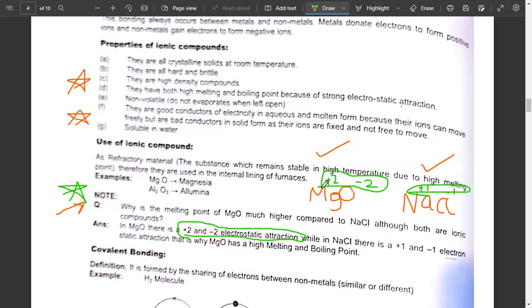The electrostatic attraction depends on charge density. The charge can be plus 1, minus 1, plus 2, minus 2, or plus 3, minus 3. The higher the charge, the greater the concentration and strength of electrostatic attraction, which leads to higher melting points.